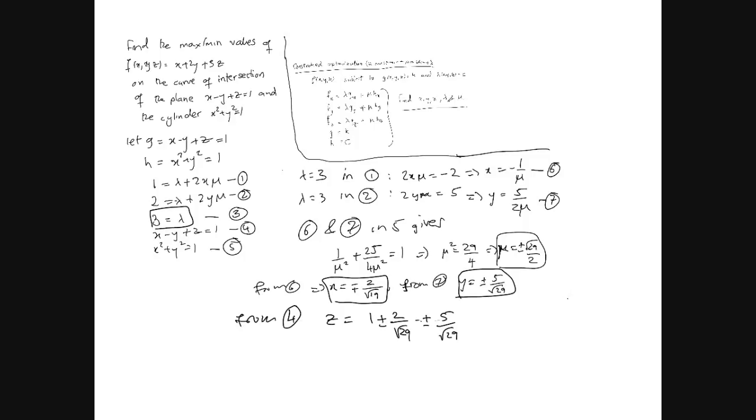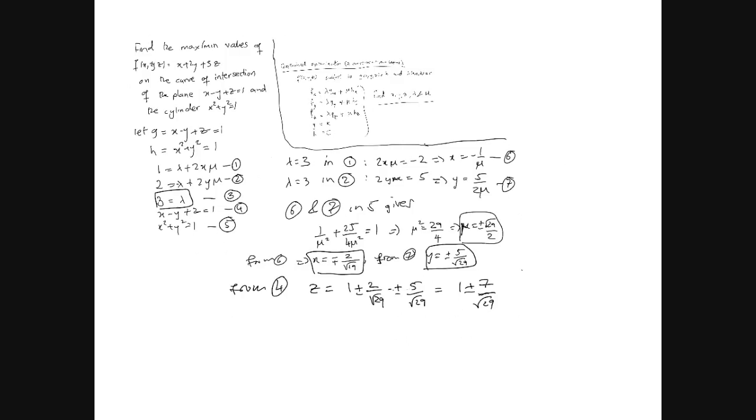That's going to give us basically 1 plus minus 7 over root 29. Remember, we have our value of z, so this implies z equals this. So let's put a square on that.